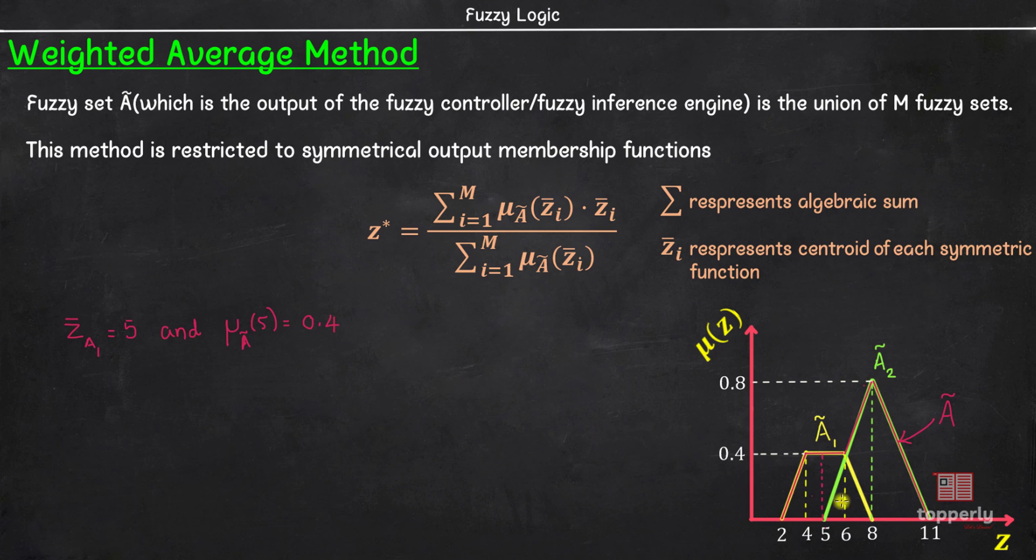Similarly, for the isosceles triangular function A2, centroid is 8. So, z̄_A2 is equal to 8 and μ_A(8) is equal to 0.8. Hence, the defuzzified value for fuzzy set A is given by z* = (0.4 · 5 + 0.8 · 8) / (0.4 + 0.8) which is equal to 7.